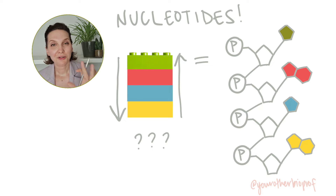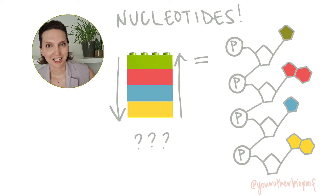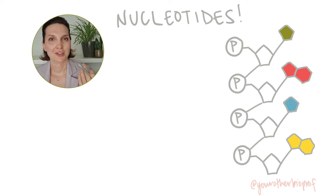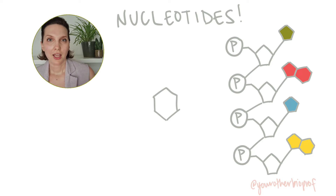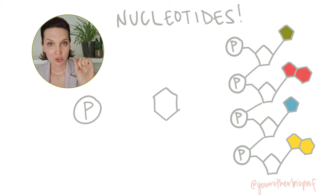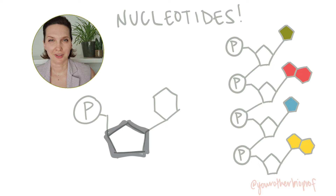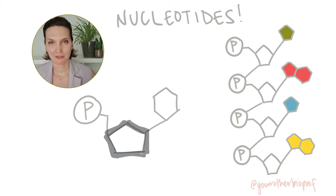Of course a nucleotide is a bit more complicated, right? We've got our nitrogenous base, we've got our phosphate, and we've got our sugar. And it's the sugar that's really important for this three prime and five prime conversation.